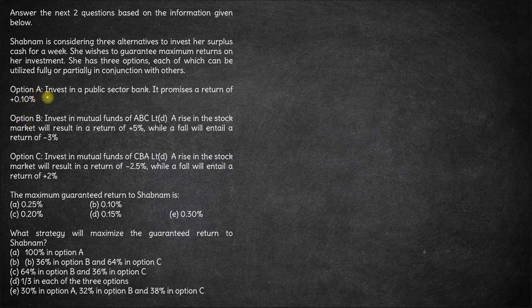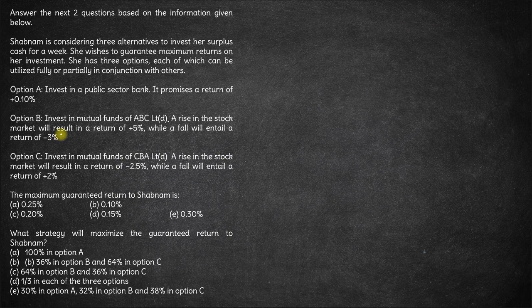Option B is to invest in mutual funds of ABC Limited. A rise in the market will give you a return of plus 5% in this option, whereas a fall will give you a return of minus 3%. So here the returns are subject to the market — if the market increases you get plus 5%, if it decreases you get minus 3%.